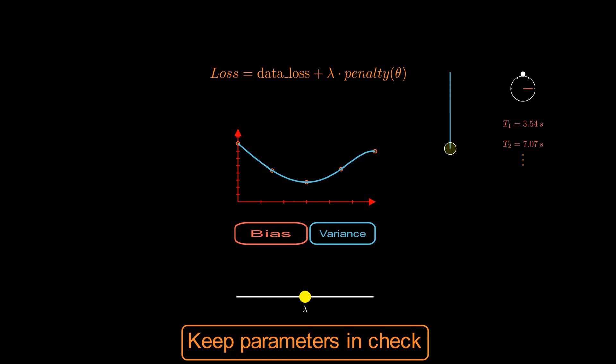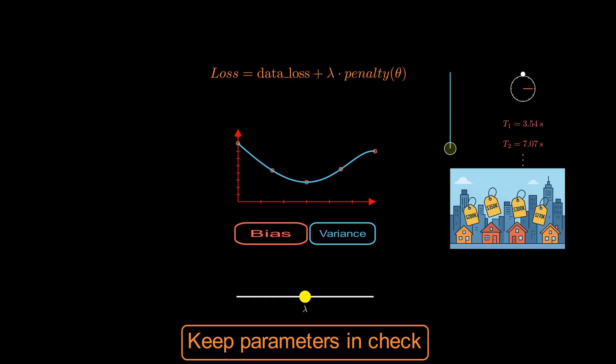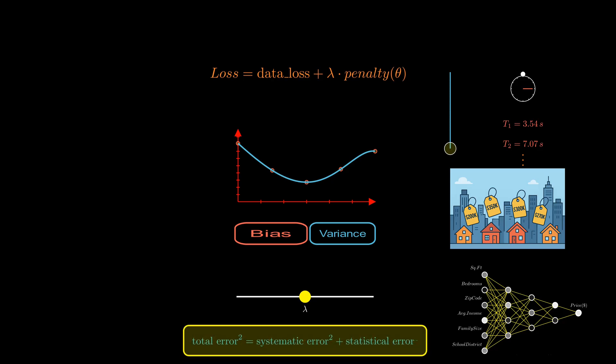So, whether you're timing a pendulum, pricing houses, or training a deep neural network, the lesson is the same. Your total error is the sum of your systematic bias and your random variance.